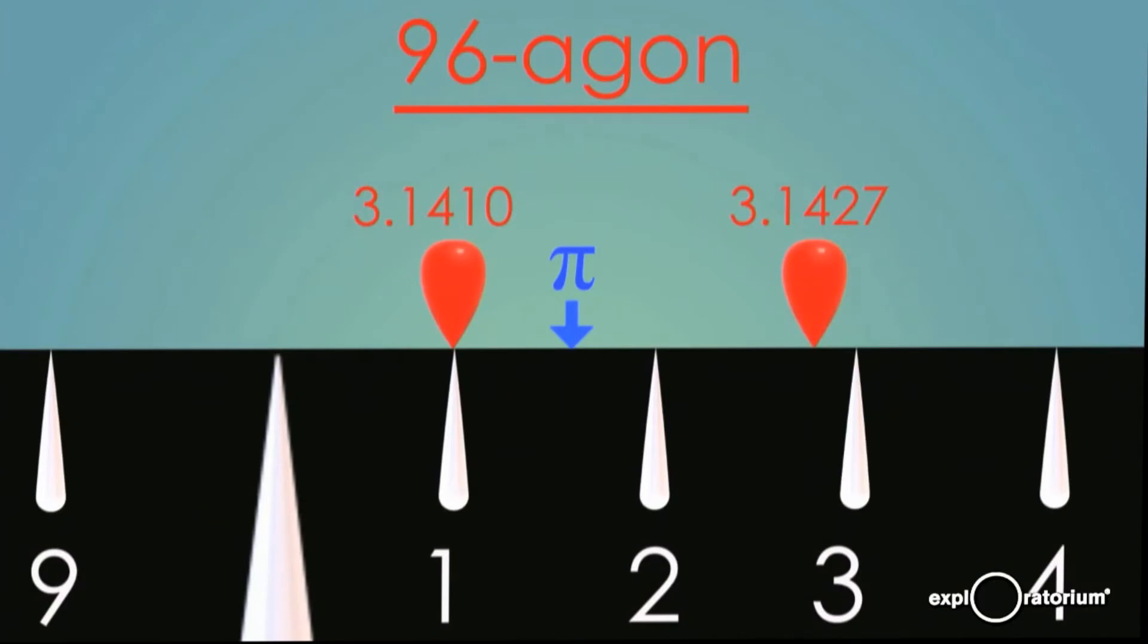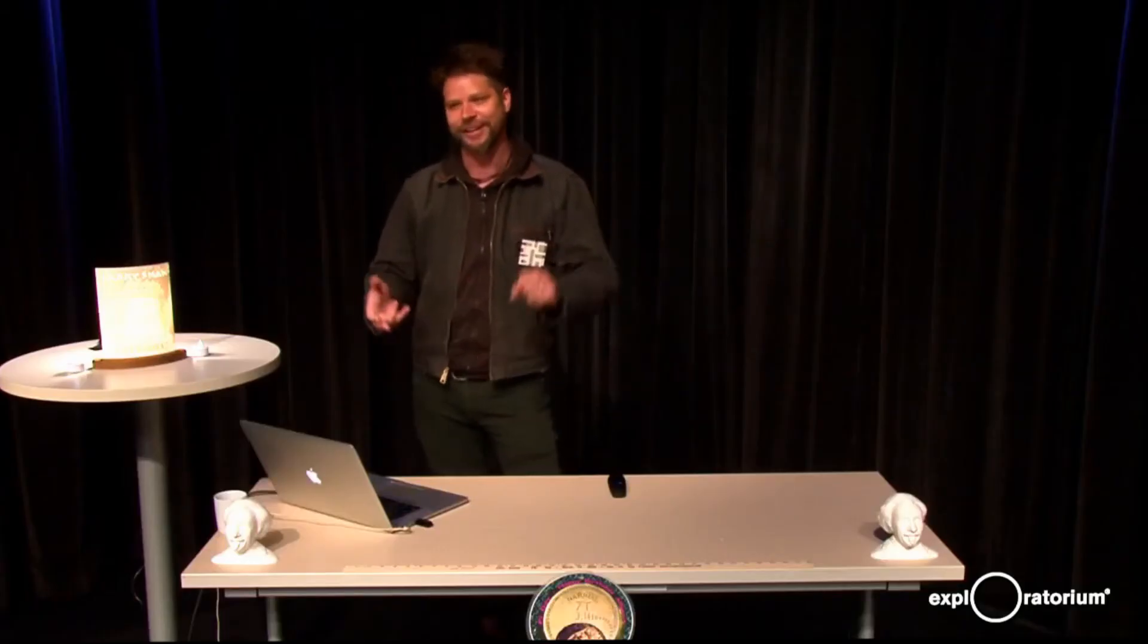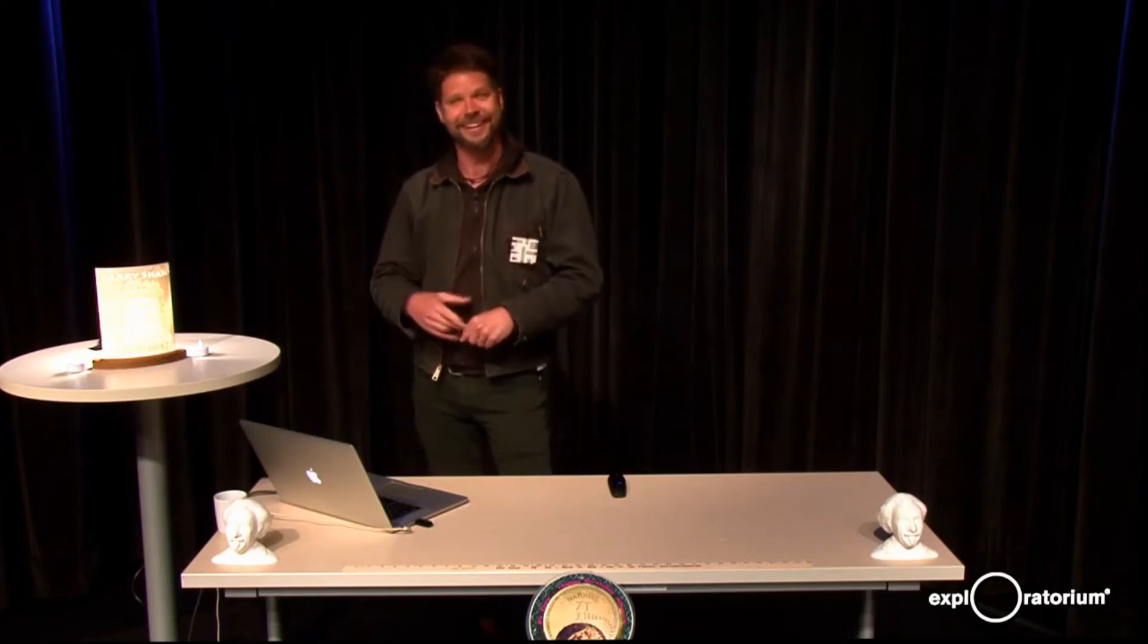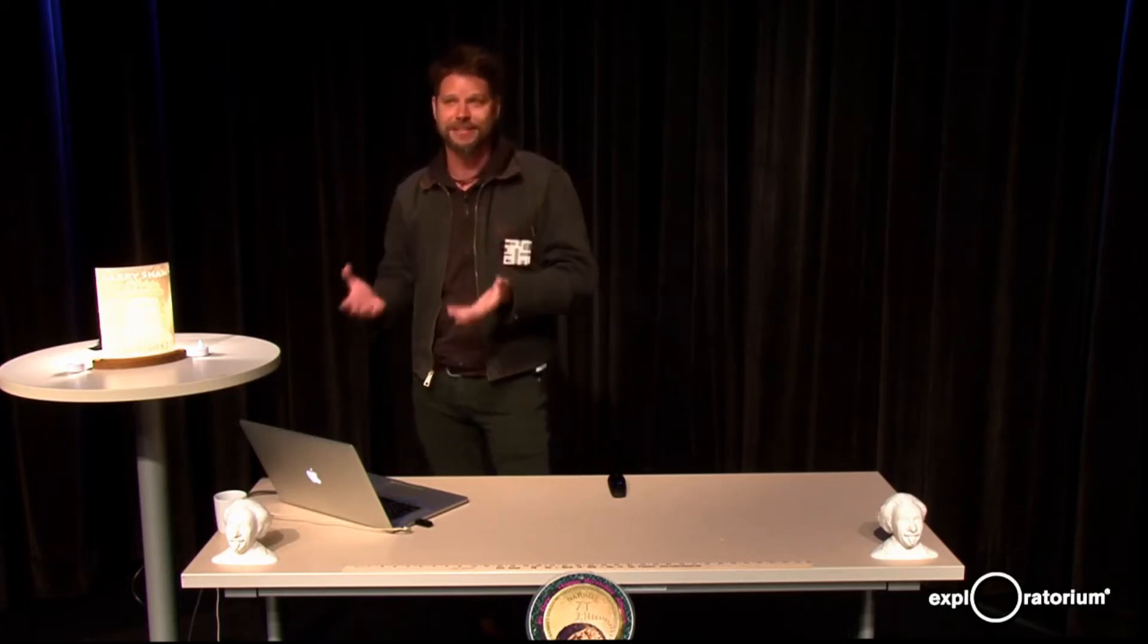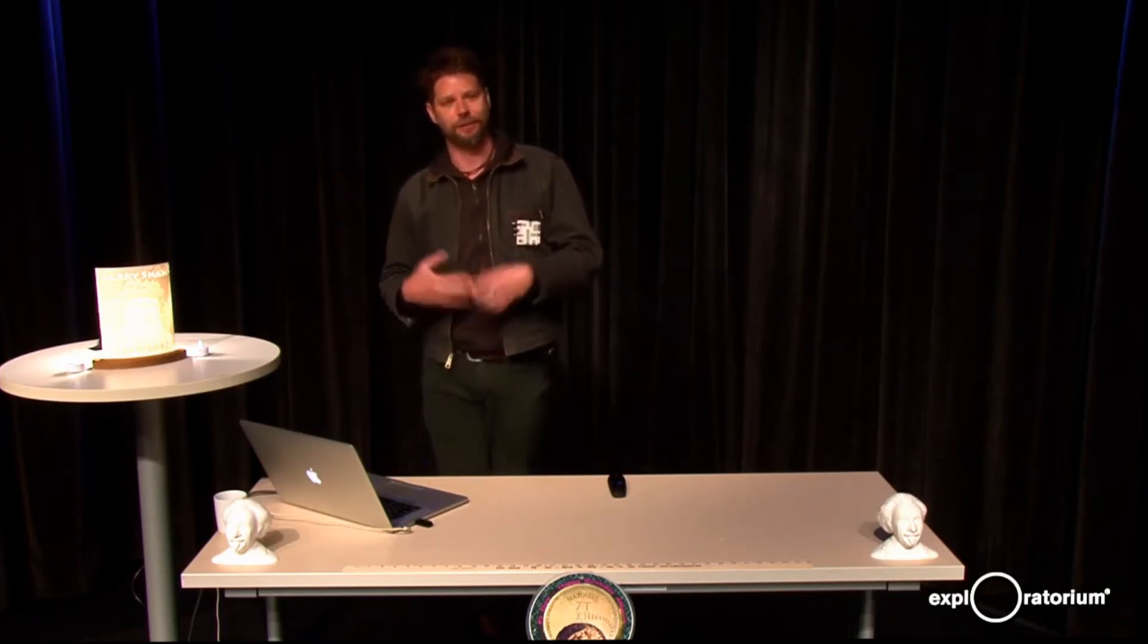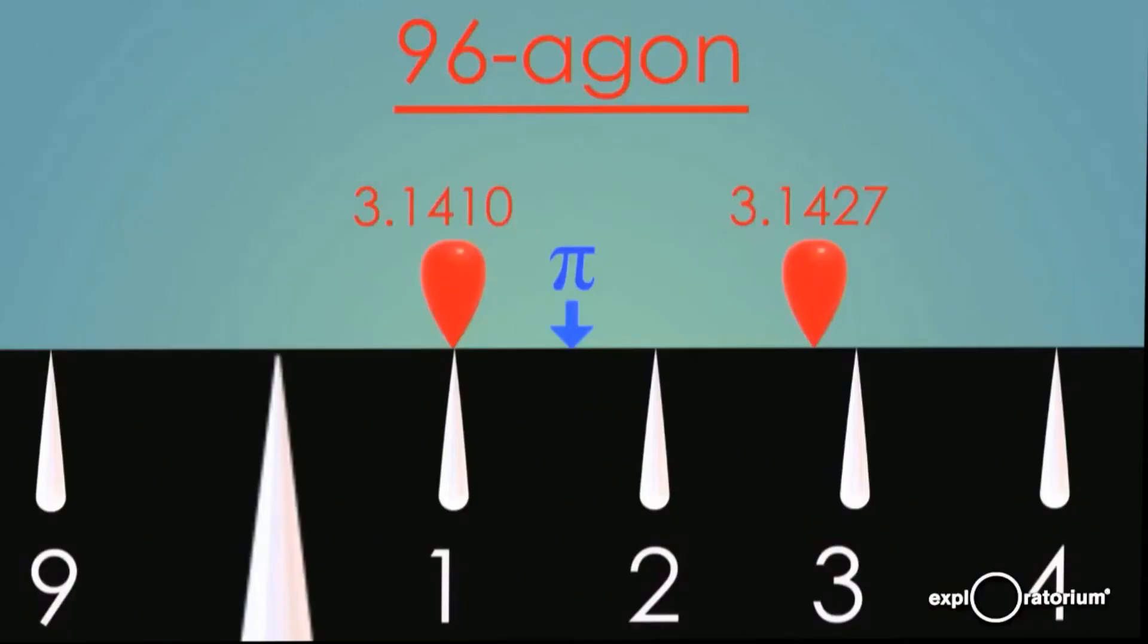And for some reason, this is as far as Archimedes went. But in principle, if you wanted more digits of pi, you could just keep doing this over and over and over again. And it's worth remembering that he was actually doing this with Roman numerals. So he didn't have any idea about the concept of zero. He didn't have any standard method for arithmetic. But amazingly, he was still able to specify pi to an accuracy of what we would now say is two decimal places.